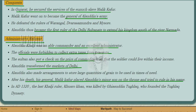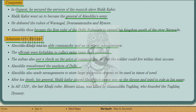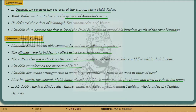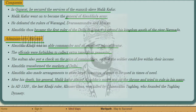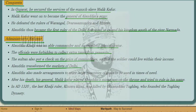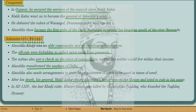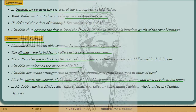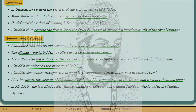How were the administrative reforms during the Khalji period? Alauddin Khalji was a good commander and an excellent administrator. Officials were forbidden from collecting taxes from the farmers. The Sultan also put a check on the prices of commodities, ensuring that soldiers could live within their income.